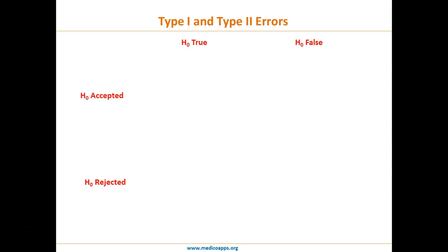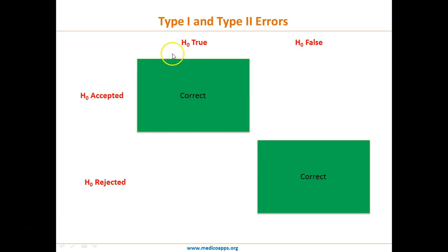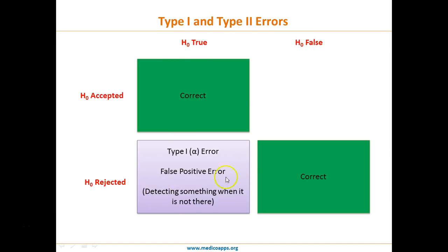When we do hypothesis testing there could be two scenarios: the null hypothesis can be true, or the null hypothesis can be false. Based on the result, the null hypothesis can be accepted or rejected. If the null hypothesis is accepted and it is true, or rejected and it is false, we get a correct result with no error. But if the null hypothesis is true and we reject it, we have detected something when it is not there — this is alpha error, or Type 1 error, or false positive error.